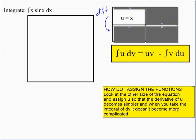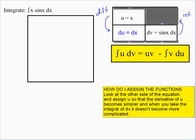If we chose u equal to x, the leftover sine x dx is what has to be dv. We integrate dv to get v, and this shouldn't become more complicated. Differentiating u gives du equals dx. Integrating dv — the integral of sine x — gives v equals negative cosine x, which doesn't become more complicated.